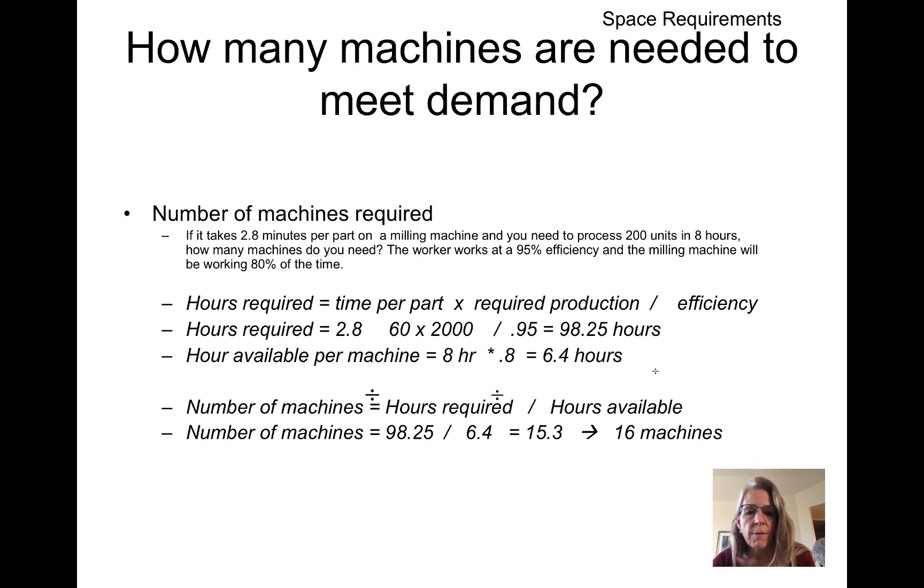The amount of time we have available in a day is eight hours, but it's only up 80% of the time, so we only have 6.4 hours available. Therefore, the number of machines is 98.25 divided by 6.4, or 15.3 machines. We can't use a 0.3 machine, so we round it up to 16 machines.